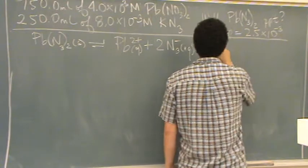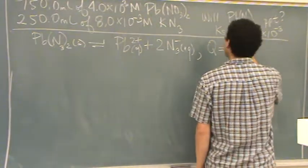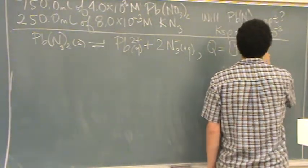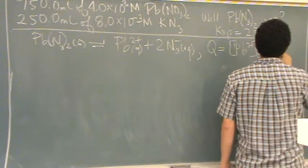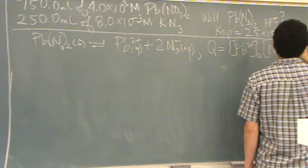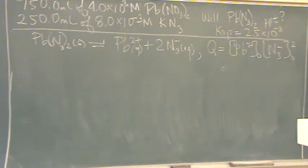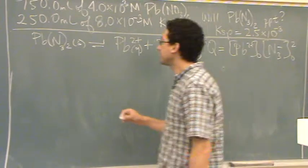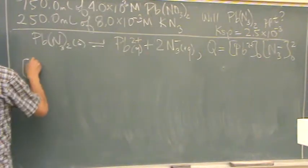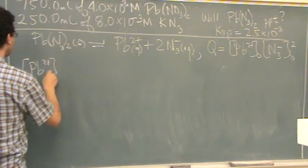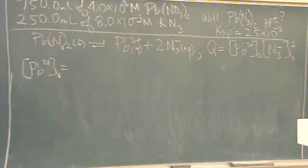And so you can write Q is the initial concentration of lead times the initial concentration of N3 minus squared. So there's Q. Find Q, you're going to finish the problem. We need the concentrations. To find the lead two plus concentration, you have to do a volume adjustment. It's M1V1 equals M2V2.